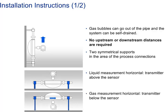For gas measurements in horizontal orientation, the transmitter should be below the sensor to avoid any condensates remaining in the sensor.